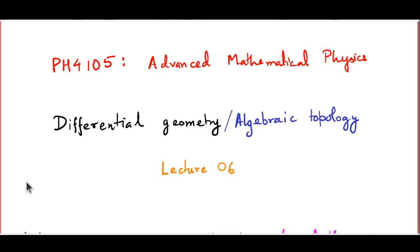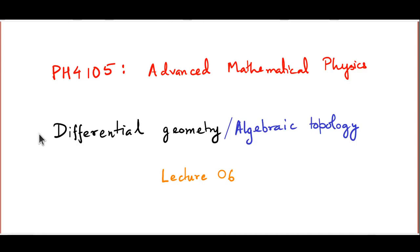Welcome to lecture number 6 of PH4105, Advanced Mathematical Physics. We are discussing differential geometry in this section, and today's topic is one which is very, very important, especially for physicists. Today we are going to discuss vectors: what they are, how they are defined in differential geometry, and how the various different notions of vectors I hinted at at the end of the last lecture come together and end up meaning the same thing.